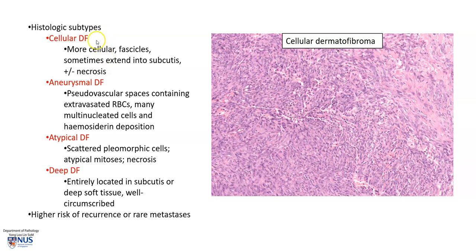There are several histologic subtypes of dermatofibroma. The cellular variant has spindle cells or fibroblasts more packed together, sometimes arranged in parallel bundles, and can extend into the subcutis with possible necrosis. The aneurysmal variant features pseudovascular spaces — not true vessels — with lakes of red blood cells, many multinucleated cells, and hemosiderin deposition. The atypical variant has scattered pleomorphic cells and sometimes atypical mitoses. The deep variant is located entirely within the subcutis or deeper soft tissue and is usually more well-circumscribed than classical dermatofibroma.